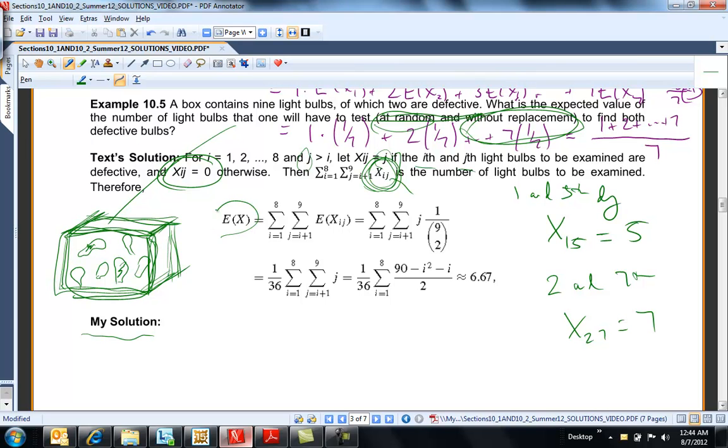So expected value is just the sum of all these expected values. So this is every case we could have. For example, I want to write it not far, like X of 1, 2, plus X of 1, 3, plus X of 1, 4, X of 1, 9, plus X 2, 3, plus X 2, 4, plus X 2, 9, plus... And there's actually 36 of these.